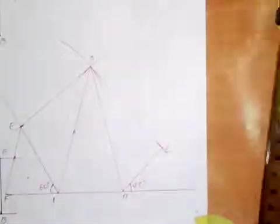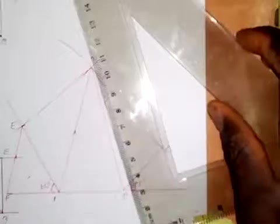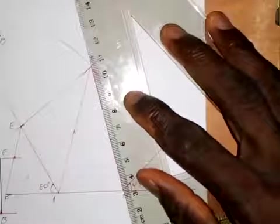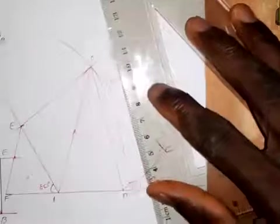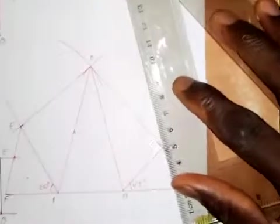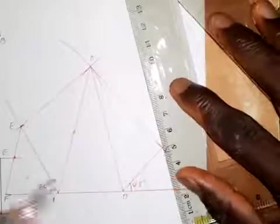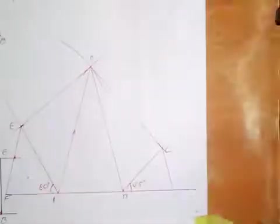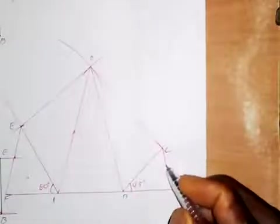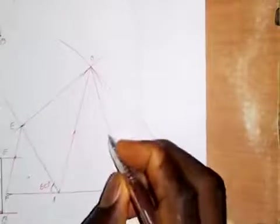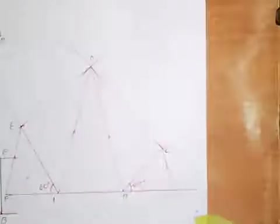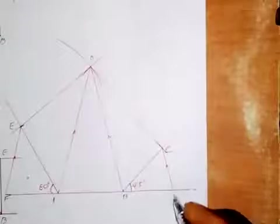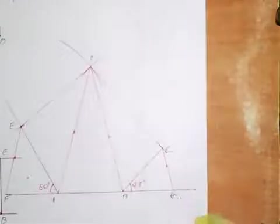I set my set square on BD and support it with my ruler, then shift the set square to point C. I draw a line through C parallel to BD. This line is parallel to BD, and this intersection point is point G.